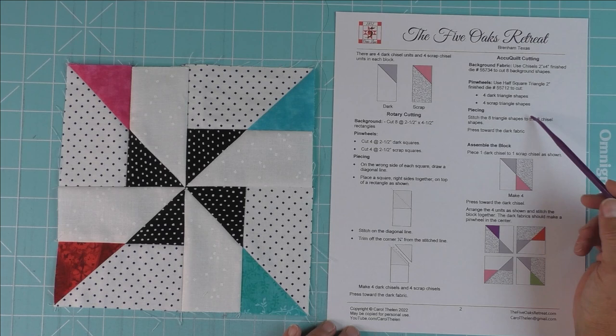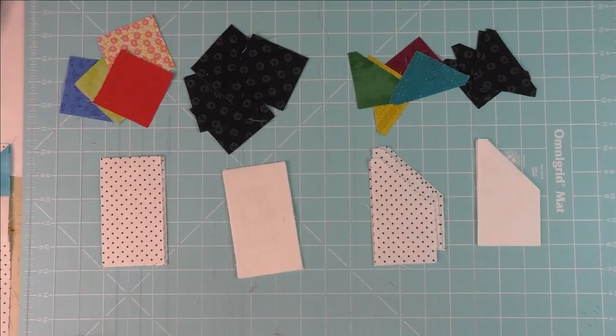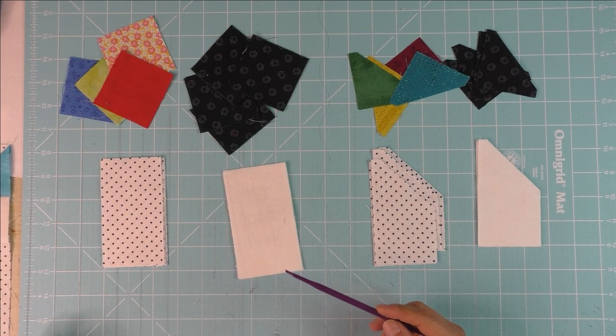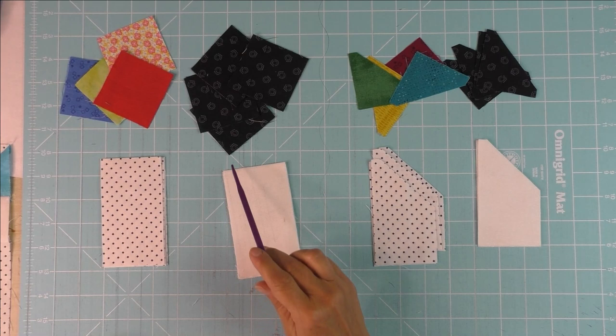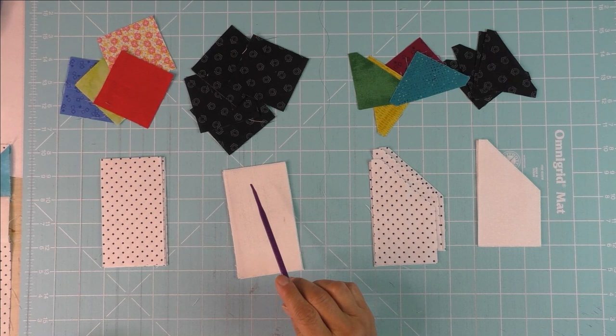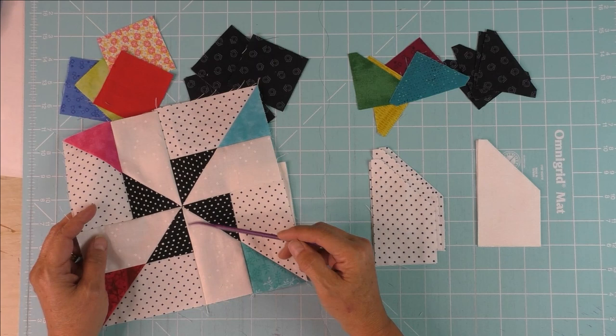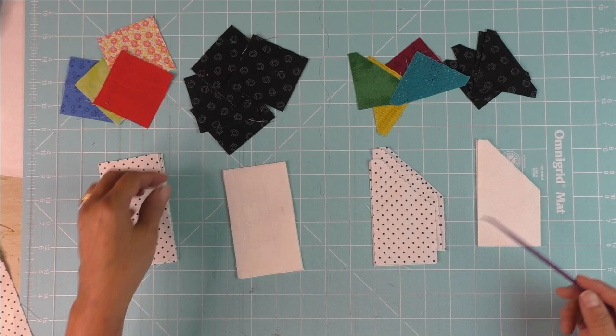Here I had pieces cut out for two blocks. This side is for the rotary cutting and we're going to cut rectangles and squares, then use the stitch and flip method to get this little chisel unit, which is this unit here.